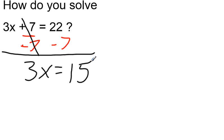Now, to get x by itself, I need to get rid of this 3. So what I'm going to do is divide both sides by 3.